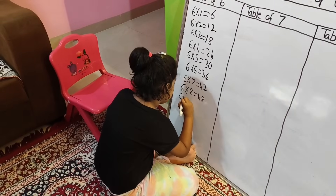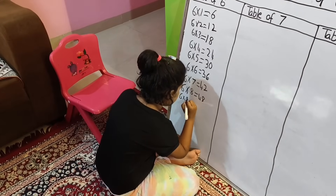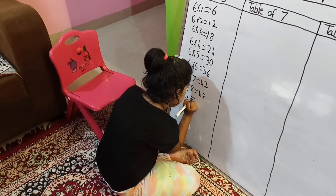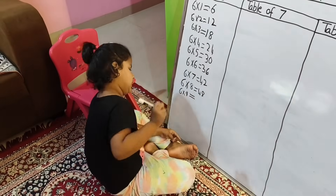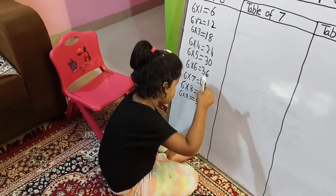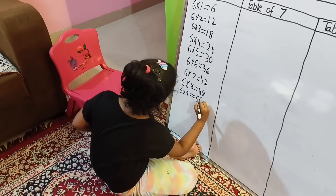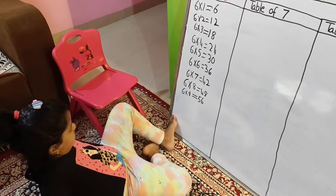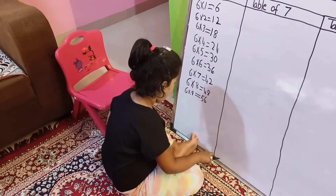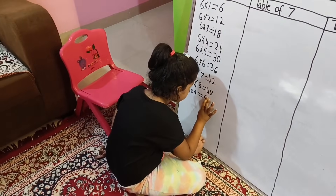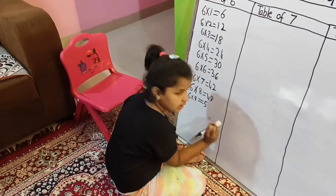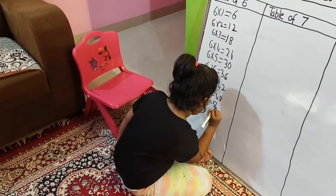Six times nine. Equal. Equal. 57? 57. 54? Yeah, six times nine. Oh, I forgot. Okay, let me do it. 54. 64.